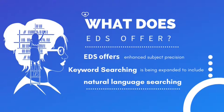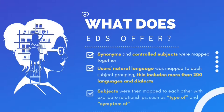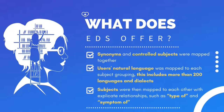EDS offers enhanced subject precision where keyword searching is expanded to include natural language searching, where synonyms and controlled subjects are mapped together. Users' natural language is mapped to each subject grouping. This includes more than 200 languages and dialects. Subjects are then mapped to each other with explicit relationships such as 'type of' and 'symptom of'.